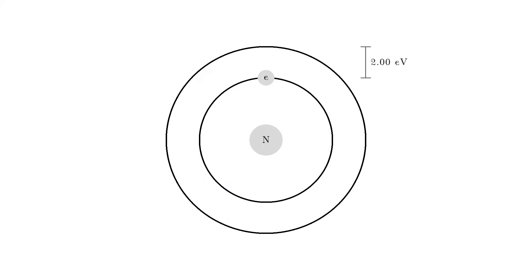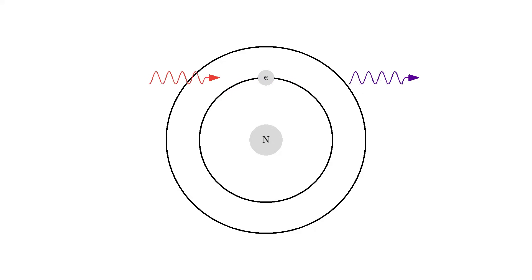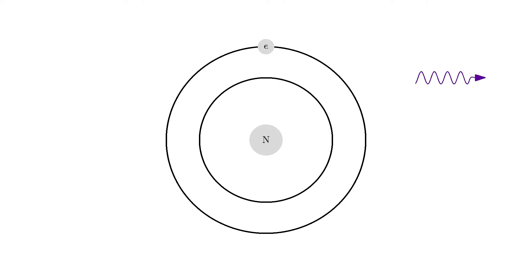Any photon that interacts with the atom won't necessarily excite it. The photon needs to have the exact same energy as the energy difference between the two states in order to excite the electron. For example, the energy difference could be two electron volts. So when a photon of incorrect energy — say a photon of five electron volts, that's the ultraviolet spectrum — passes through the atom, it has too much energy and cannot excite the atom into that state. But a two electron volt red photon has the correct energy and so it can excite the electron. After some time, the electron will relax and send out the same energy photon in a random direction.